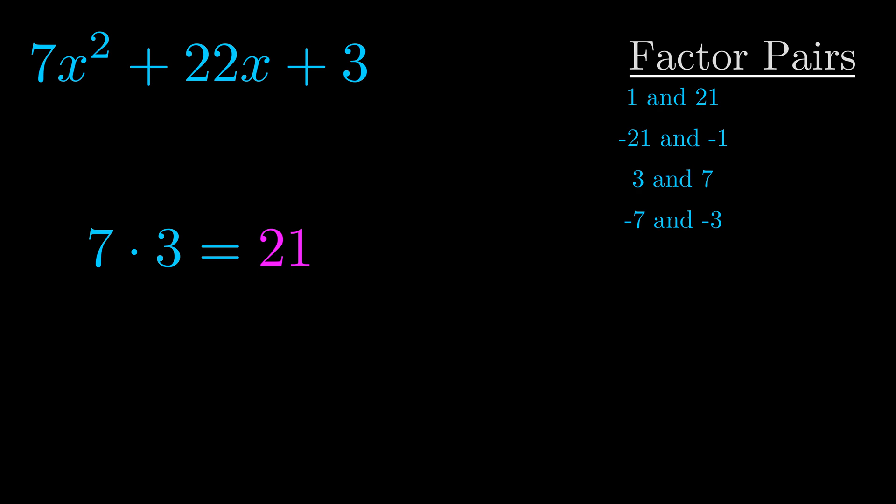The b value is the coefficient on the x term. That's the middle term, the one that we haven't done anything with yet. And really this is the only factor pair that we need.